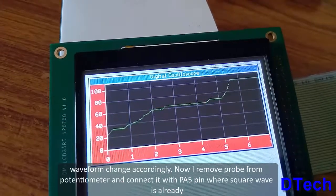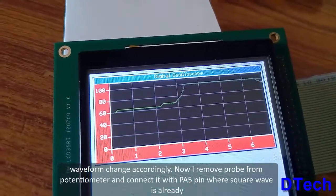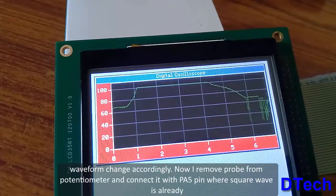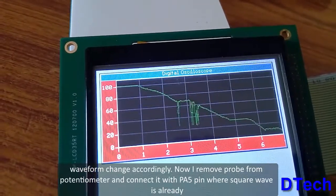Now, as I decrease the resistance of the potentiometer, the waveform reduces and goes to zero.